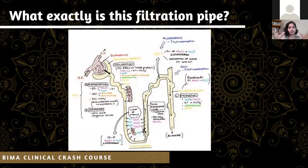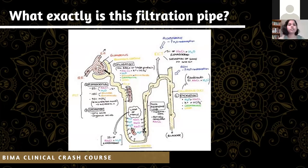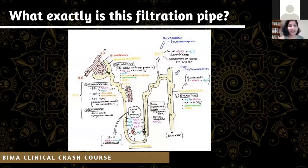Starting at the glomerulus — this is a high-pressure filtration system pushing against Bowman's capsule, with the afferent and efferent arterioles. Ideally, nothing large — no large proteins or red blood cells — should come through. You only get a little glucose and amino acids, predominantly water, sodium, potassium, bicarbonate, creatinine, and urea passing through.